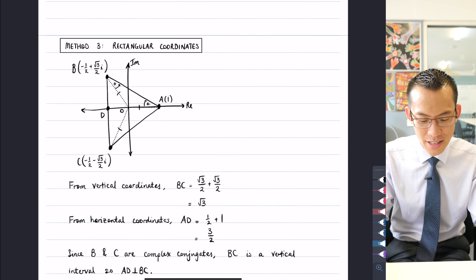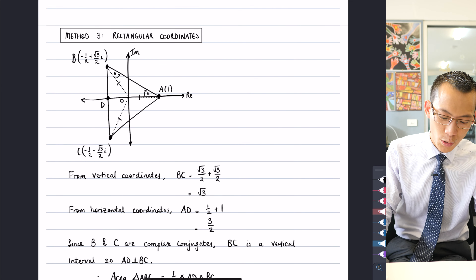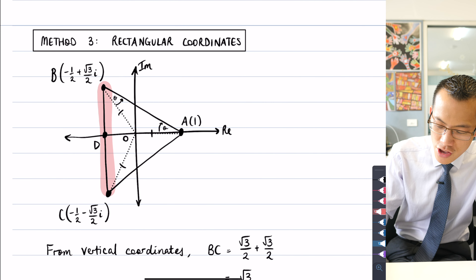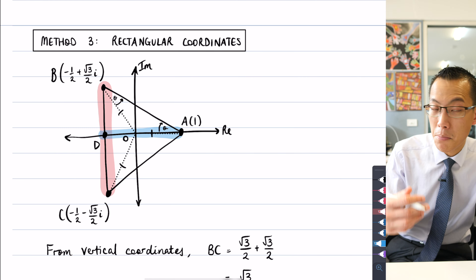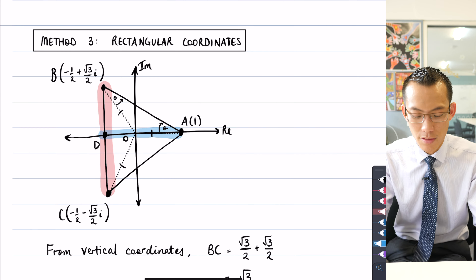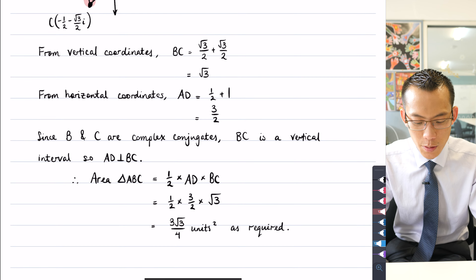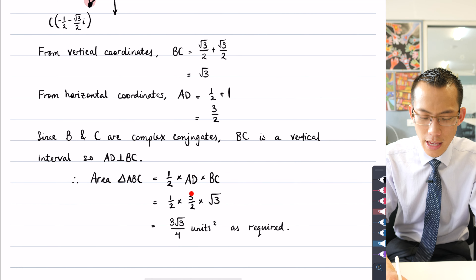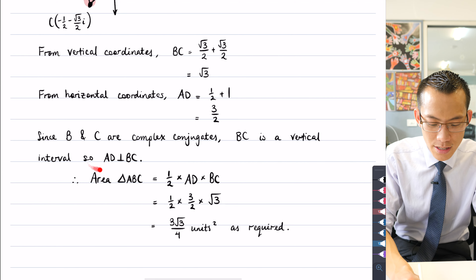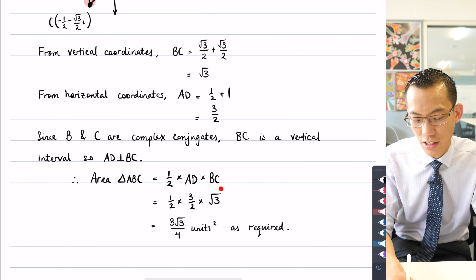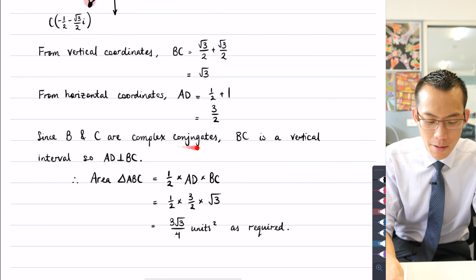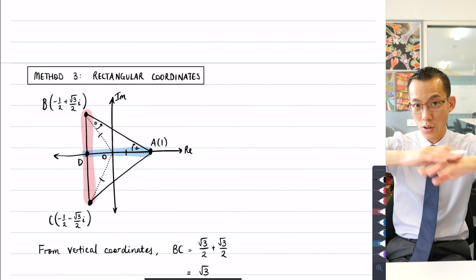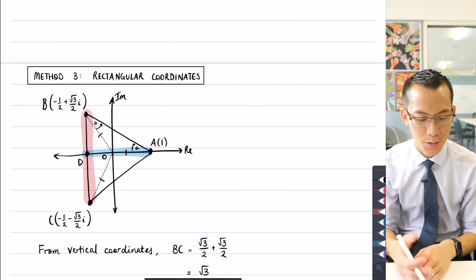The third distinct method is to use vertical and horizontal coordinates: work out BC using vertical coordinates for the length, then use horizontal coordinates to find the perpendicular height if you call BC the base. That lets you use half times base times height. You just need to be careful to justify why one is the base and one is the height — I showed that BC is a vertical interval and AD lies on the real axis, so they're perpendicular.